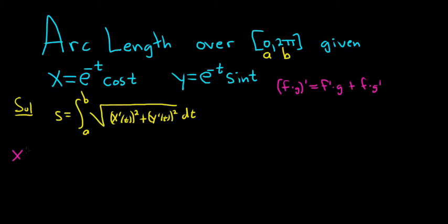So x prime — it's going to be the derivative of e to the negative t. The derivative of e to the negative t is just e to the negative t times the derivative of the inside by chain rule, and the derivative of negative t is negative 1. So that's the derivative of the first times the second, plus the first — e to the negative t — times the derivative of cosine, which is negative sine.